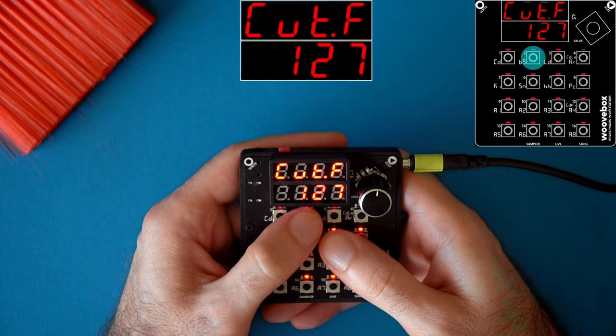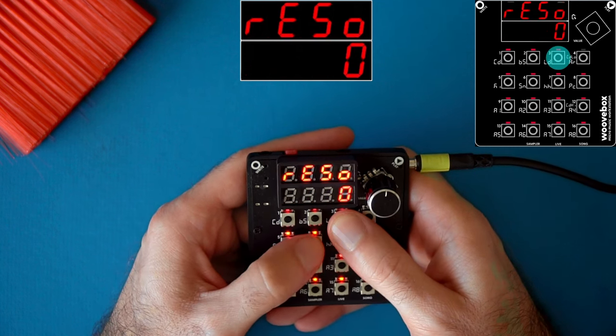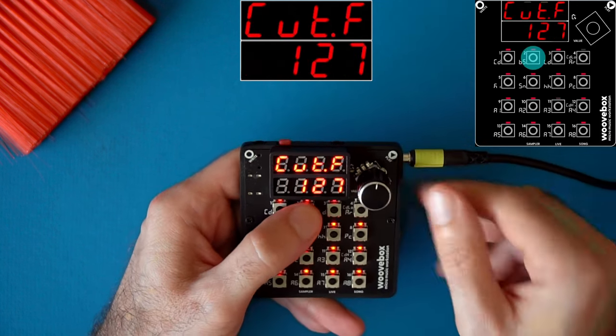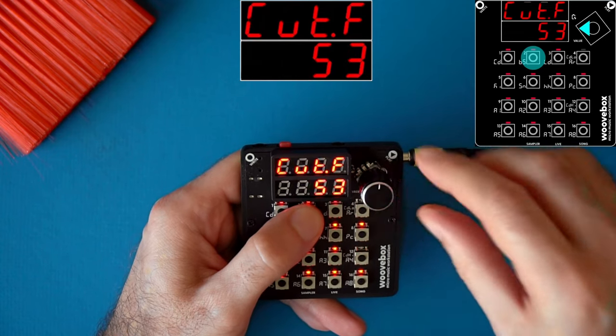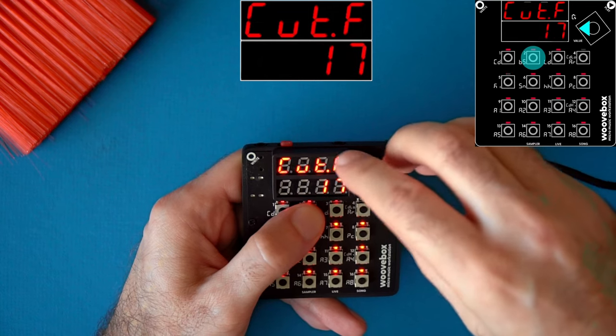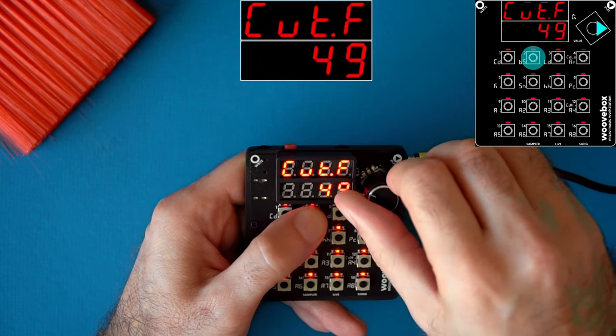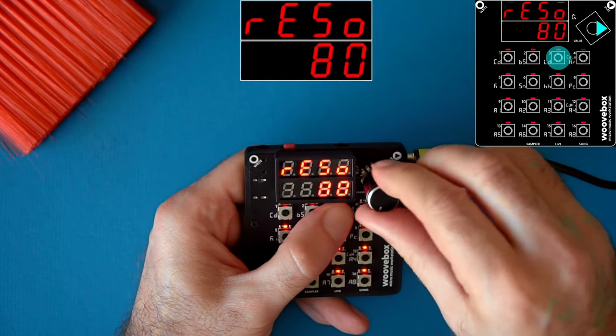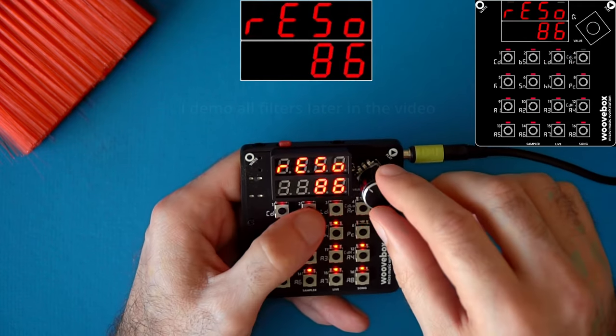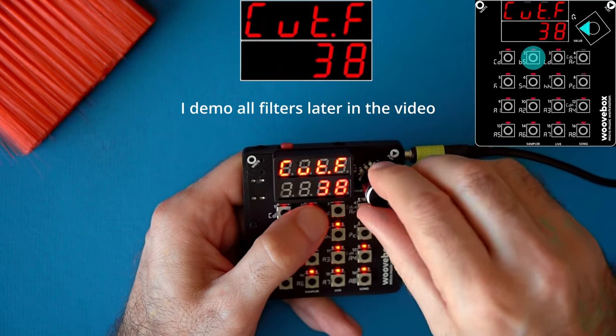The next two parameters are cutoff frequency and resonance. You have to be careful going high on the resonance depending on the filter.